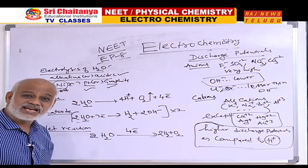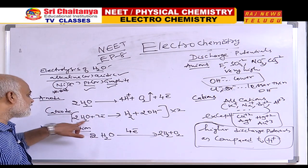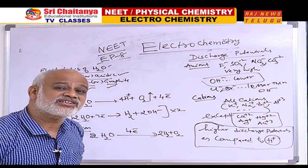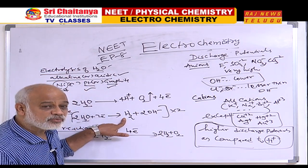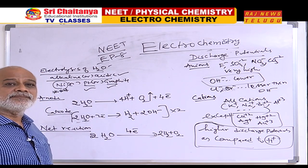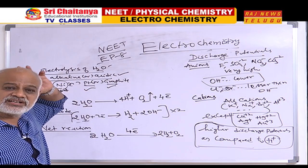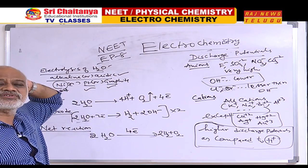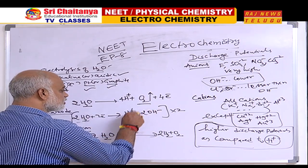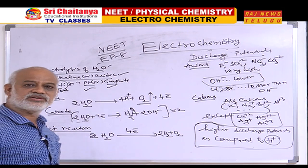Qualitatively, H₂ gas at cathode and O₂ gas at anode. Now, quantitatively — when I balanced the anode equation in terms of charges, I got 2 moles of electrons. Since the same amount of charge must pass through both electrodes, I multiplied the cathode equation by 2, giving 4 moles of electrons gained and 4 moles lost — that is, 4 Faradays of electricity. The net equation is 2H₂O → 2H₂ + O₂.